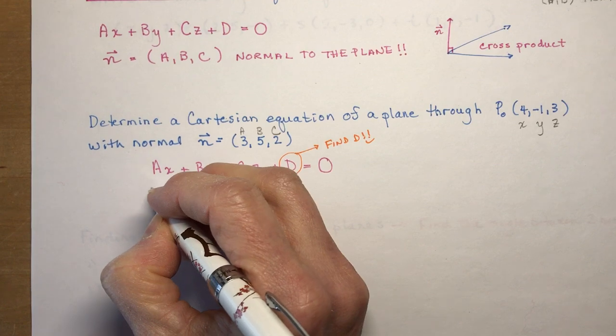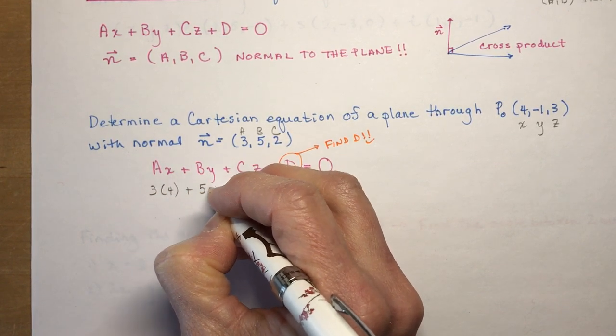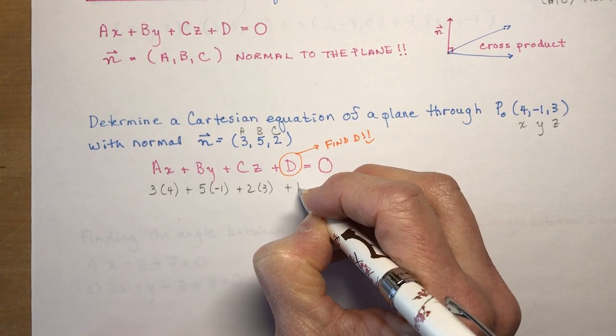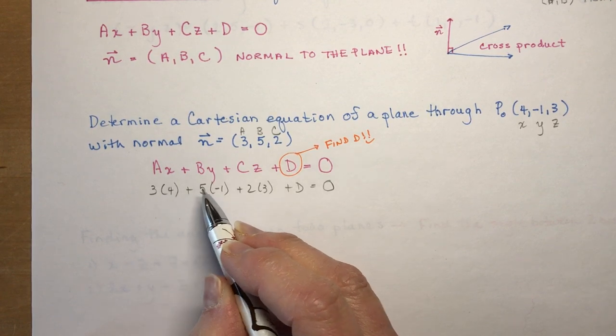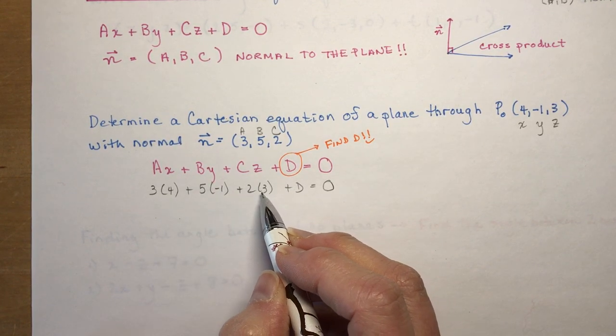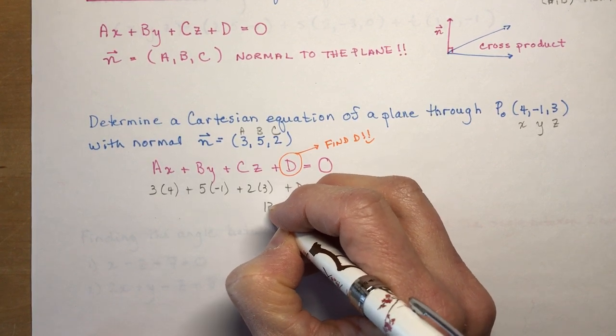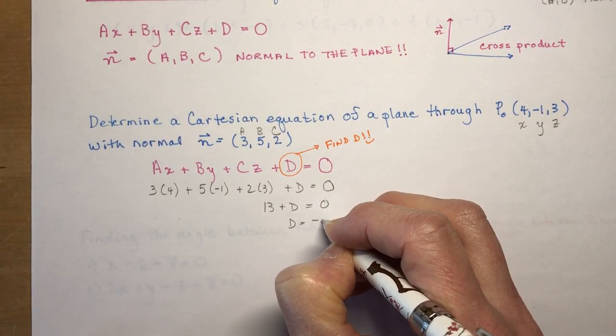So let's plug everything in. We'd have 3 times 4 plus 5 times negative 1 plus 2 times 3 plus d is equal to 0. And this is going to give you 12 minus 5 is 7 plus 6 is 13. So 13 plus d equals 0, and d is equal to minus 13.